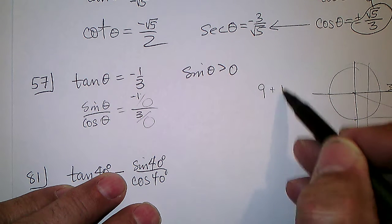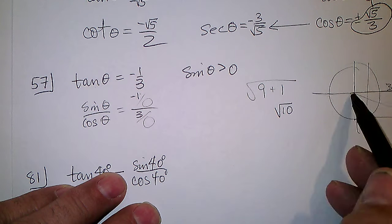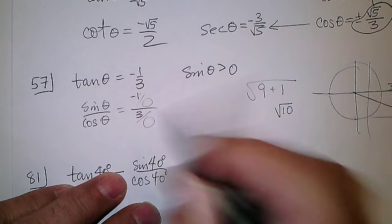So 3 squared would be 9, minus 1 squared would be 1, and then we take the square root, so we've got the square root of 10, that's how long that is.